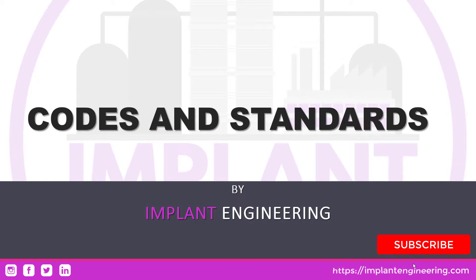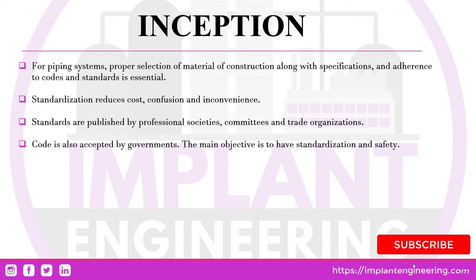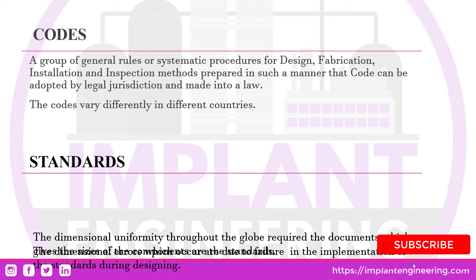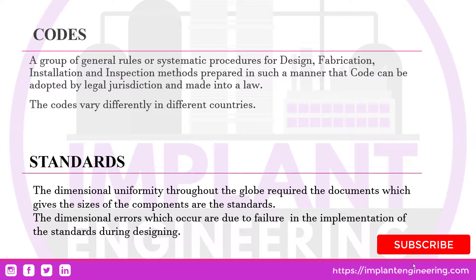Hello and welcome back to yet another video by Implant Engineering. In this video we shall learn about codes and standards that are used in the piping industry. One characteristic aspect of a piping system is the proper selection of material of construction along with its specification. Standardization helps in the reduction of cost, confusion and inconvenience. These are published by professional societies, committees and trade organizations across the globe. Codes and standards are also accepted by governments. The main objective is to have standardization and safety.